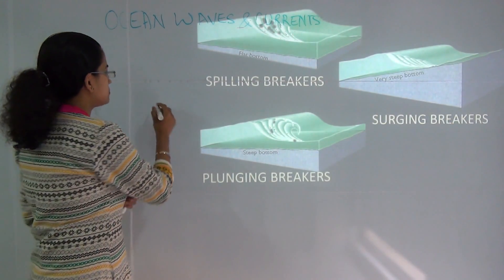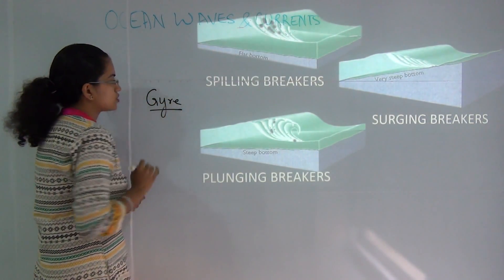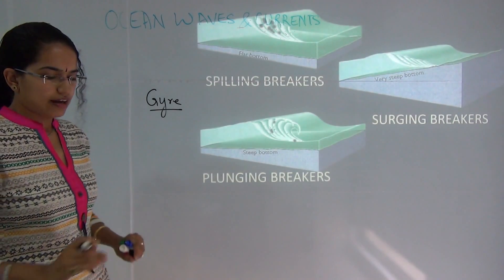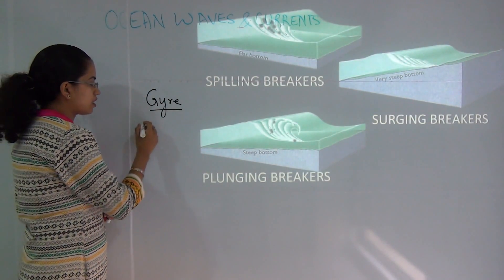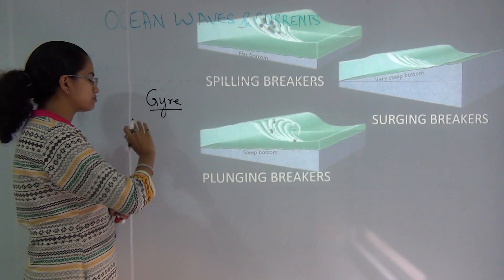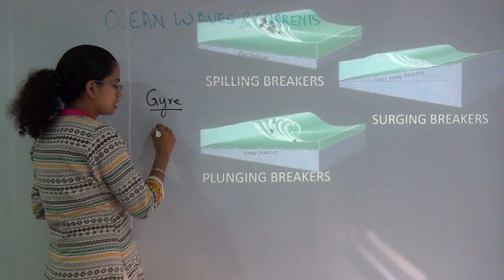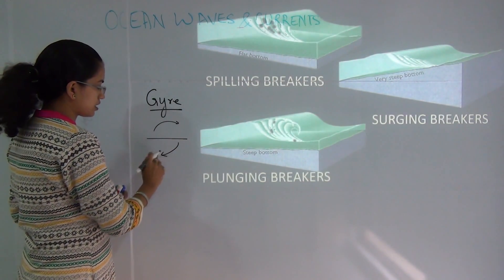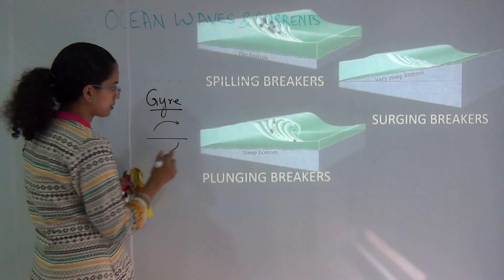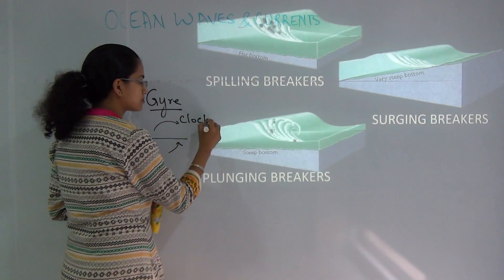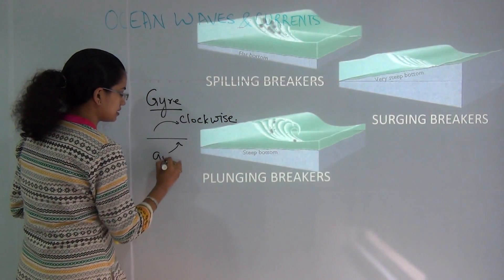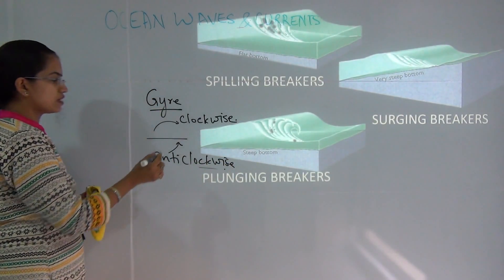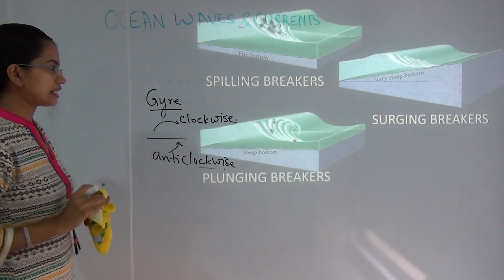There is a term known as gyres — a kind of rotation that occurs on various ocean surfaces. What is important to know is the direction of rotation: the current is clockwise for the northern hemisphere and anticlockwise for the southern hemisphere. That is how ocean gyres take place.